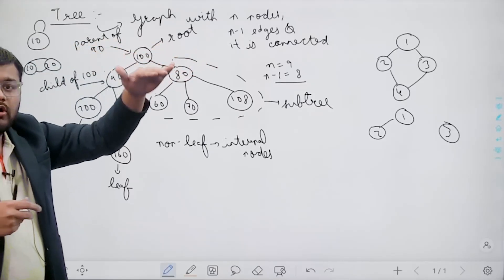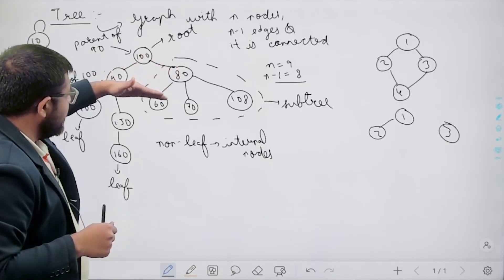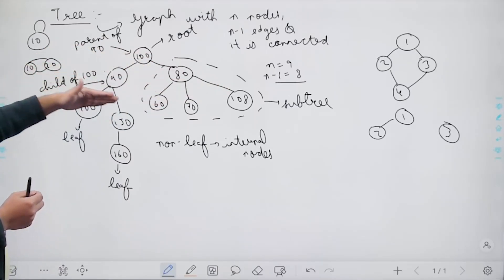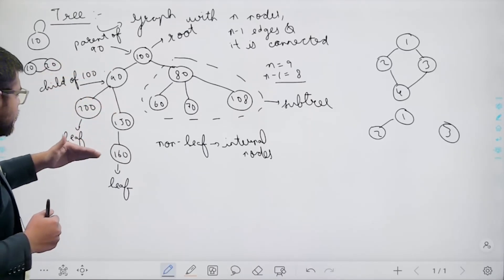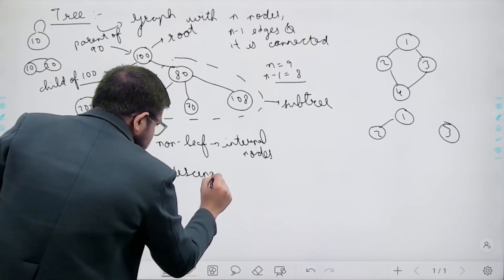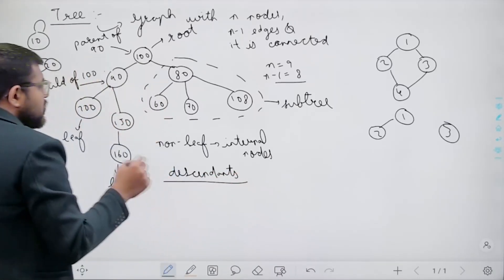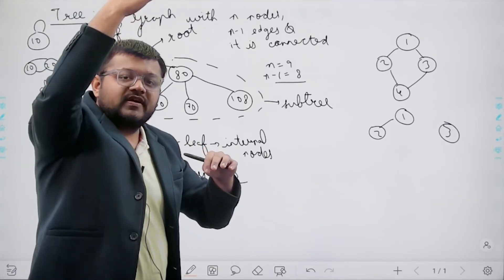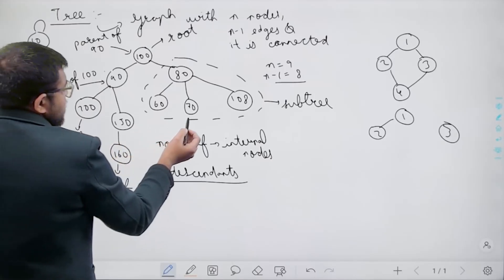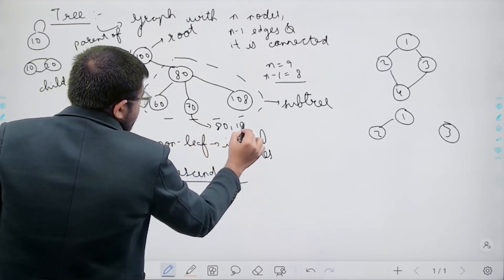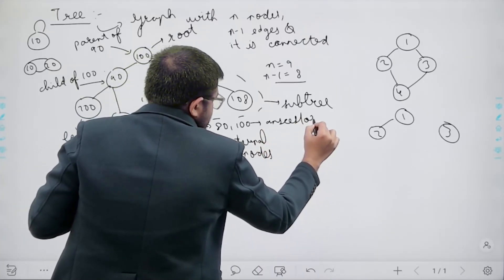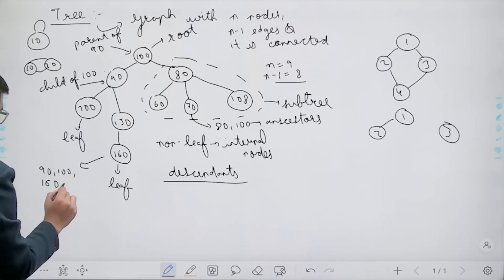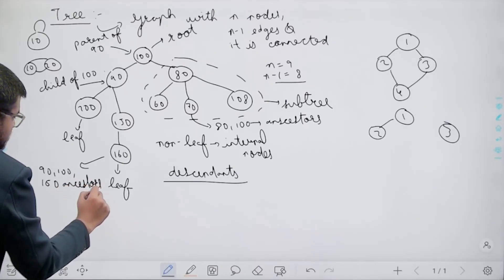For a particular node, all nodes below it are called descendants. For example, for node 80, the nodes 60, 70, and 108 are descendants. For node 100, nodes 90, 80, 60, 70, 108, 200, 150, and 160 are all descendants. For node 90, nodes 200, 150, and 160 are descendants. Additionally, ancestors are the parent of a node, then the parent's parent, and so on. For example, for node 70, nodes 80 and 100 are ancestors. For node 160, nodes 90, 100, and 150 are ancestors.